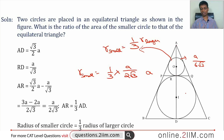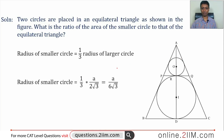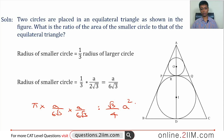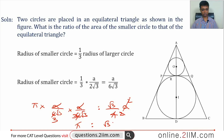Now we have the radius of the smaller circle: a/(6√3). Area of the smaller circle = π × (a/(6√3))². Area of the equilateral triangle = (√3/4)a². The a² cancels. After simplification: the ratio works out to π : 27√3. The ratio of the area of the smaller circle to that of the equilateral triangle is π : 27√3.